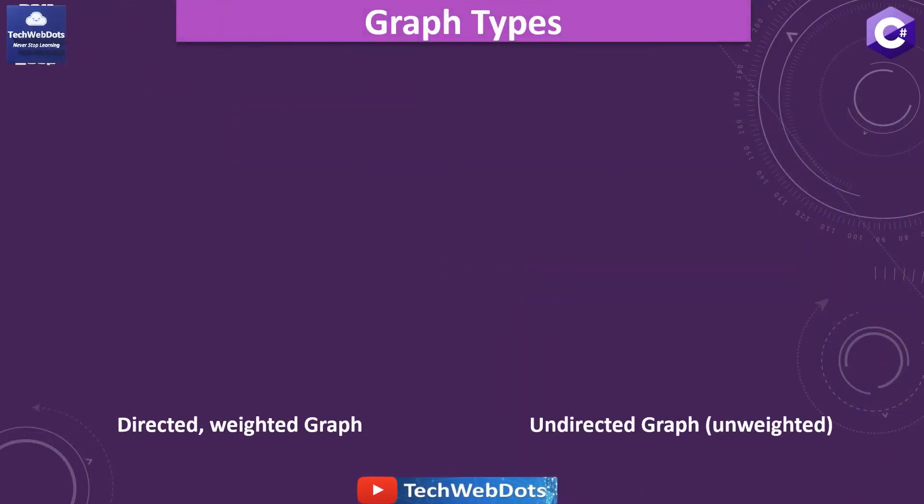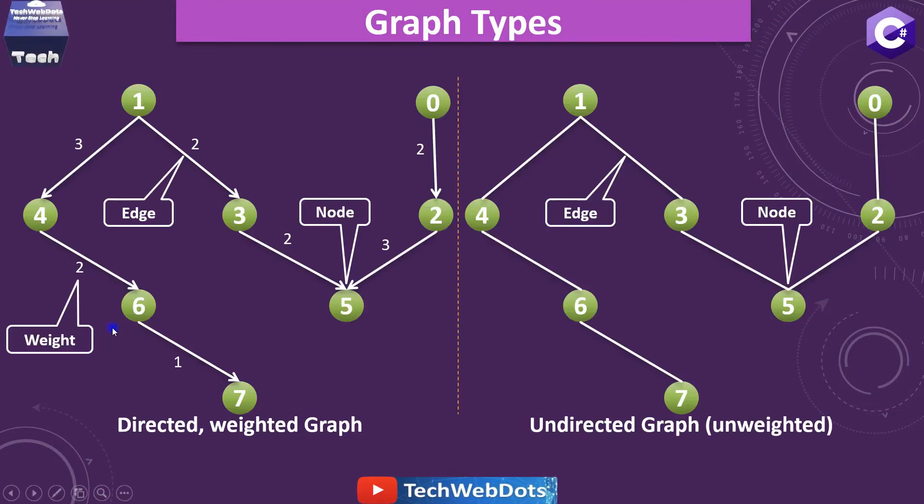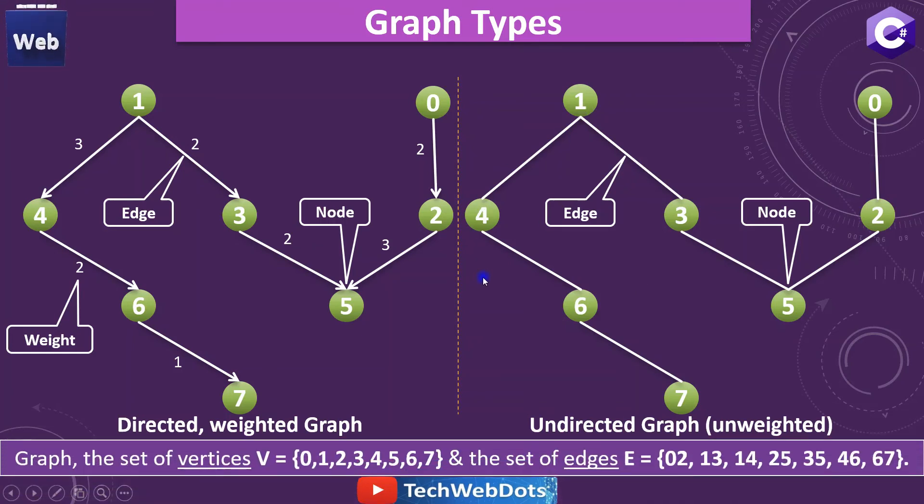Now I would like to show you the types of graph. The one type you have already seen which is the directed one and the weighted one. These are the nodes, this is the edge and this is my weight. But on the right-hand side you can see there is no direction, there is no weight. There is only node and edge. So this graph is called undirected graph or unweighted graph. And we can also say this is a bi-directional graph, meaning direction can be 4 to 1 or 1 to 4.